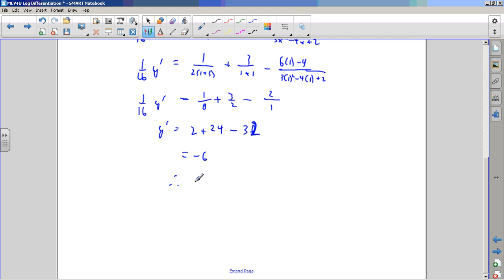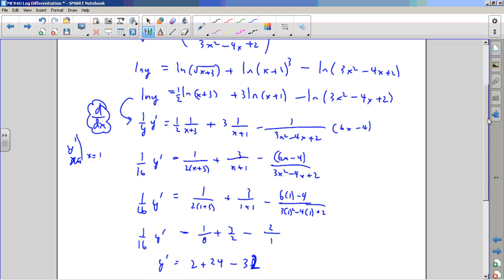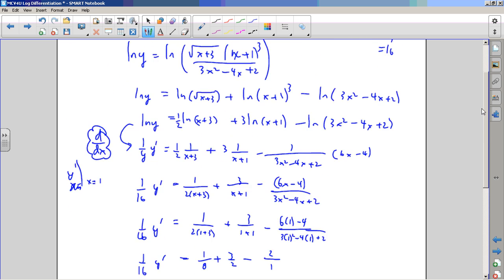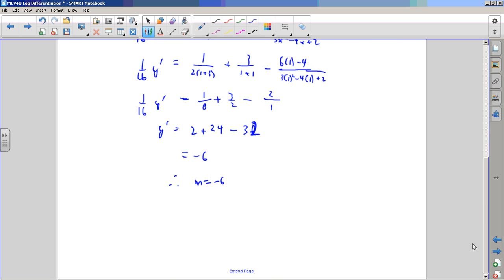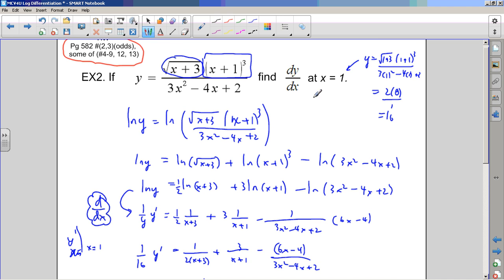Therefore, the slope is minus 6. The slope of this function at x equals 1 is minus 6. Check my arithmetic. Make fun of me in class if I goofed it up. Check it on Desmos. See if the slope at x equals 1 is minus 6, which would be a steep downhill slope.